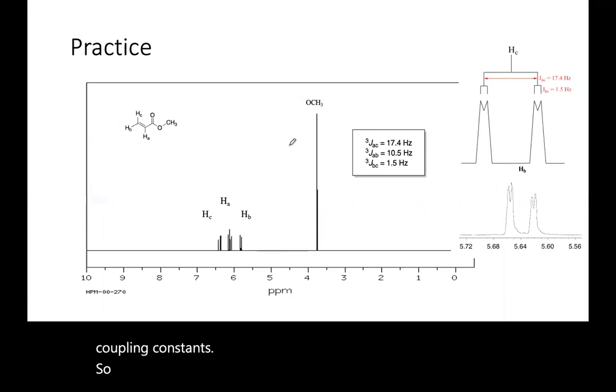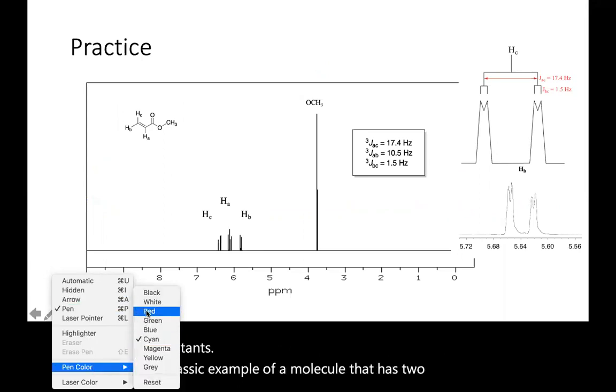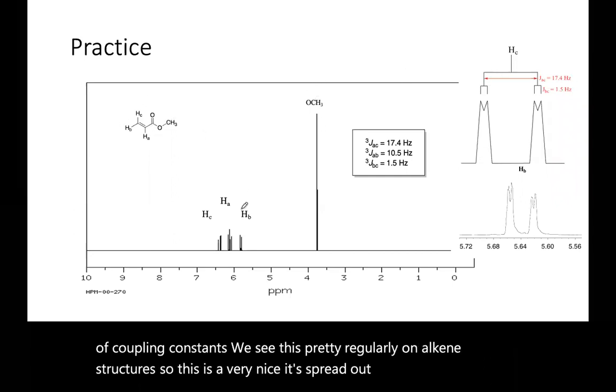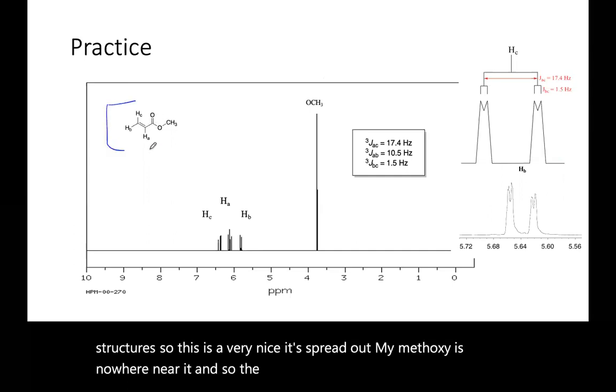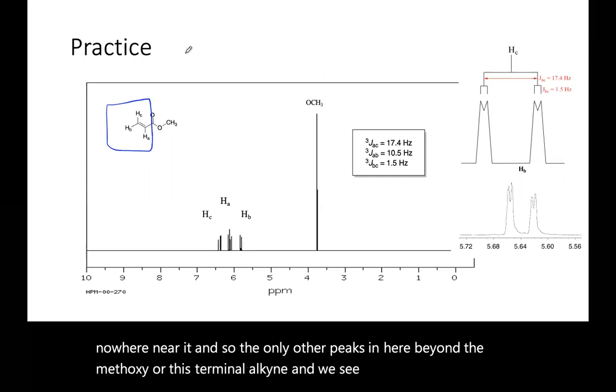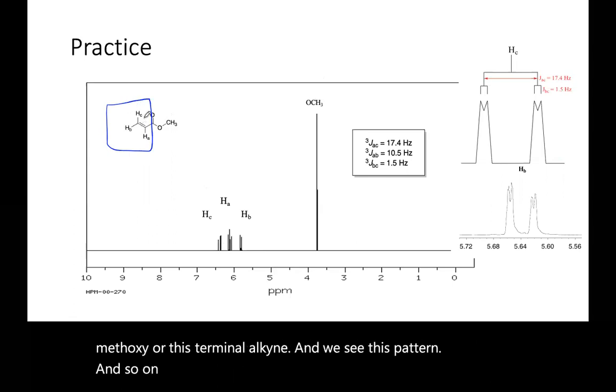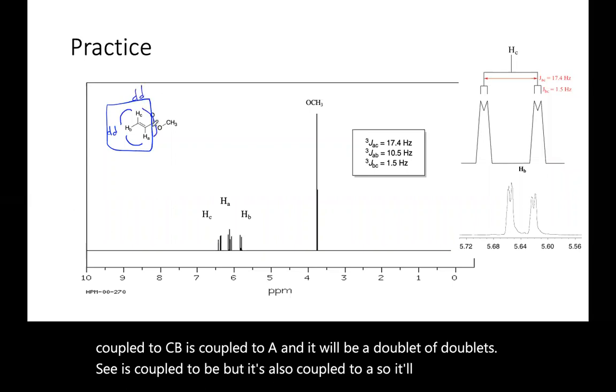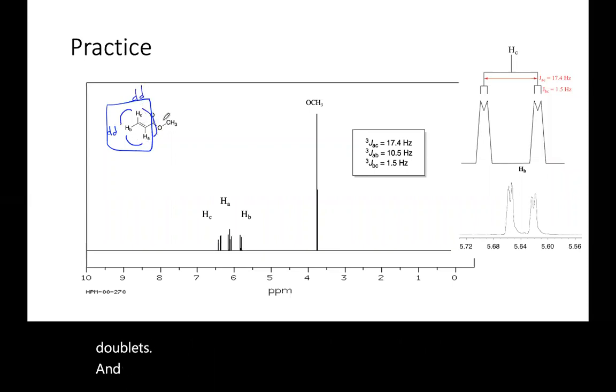Here's a classic example of a molecule that has two different types of coupling constants. We see this pretty regularly on alkene structures. This is very nice, it's spread out, my methoxy is nowhere near it, so the only other peaks in here beyond the methoxy are this terminal alkene, and we see this pattern. And so on that, remember we don't have free rotation, so B is coupled to C, B is coupled to A, and it will be a doublet of doublets. C is coupled to B, but it's also coupled to A, so it'll be a doublet of doublets, and A to C and B, and it'll be a doublet of doublets.